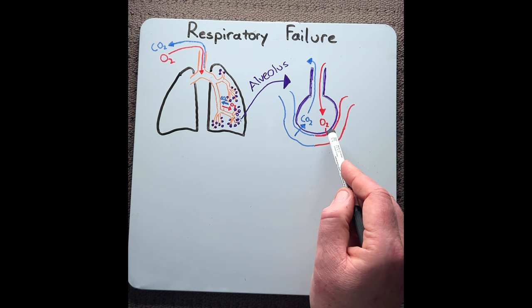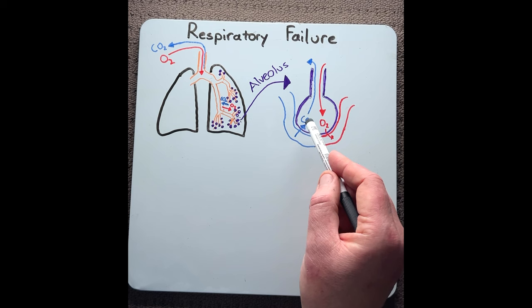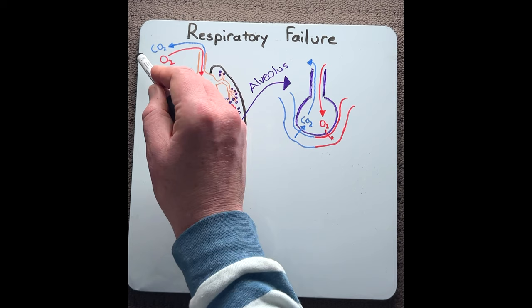Now at the same time, at the alveoli, CO2 is pulled out of the blood and then is moved out of the lungs where we exhale it into the environment. This is to prevent a buildup of CO2 in our body.